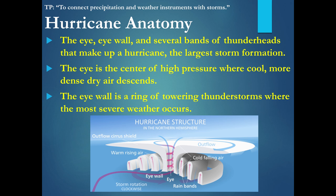Hurricane anatomy includes the eye, the eye wall, and several bands of thunderheads. The eye is the center, and if you travel through the eye of a hurricane in an airplane, it's actually beautiful weather conditions — there's high pressure there, with cool, dense air that sinks. That air eventually gets pushed out to form all the thunderhead bands of storms. The eye wall is a ring of towering thunderstorms where the most severe weather occurs. In the northern hemisphere, the rotation is inward and counterclockwise, as it is a low pressure system.